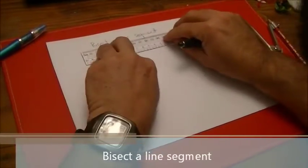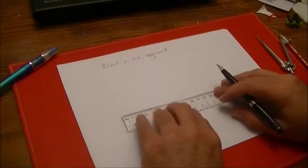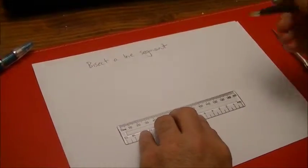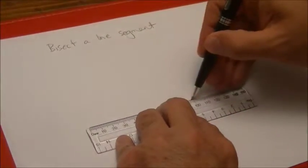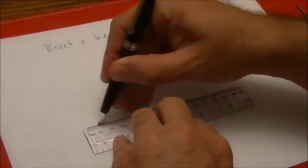Task number one, bisect a line segment, which is what that says, although it's a bit scrappy. I'm assuming that bisect actually means cut it into two equal bits. I certainly know that it's two bits. The question is, is it really two equal bits? That's what we'll find out by doing it.